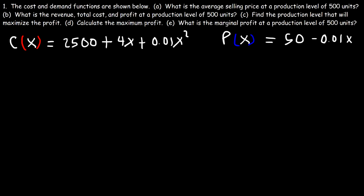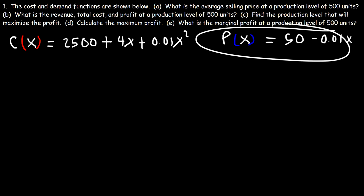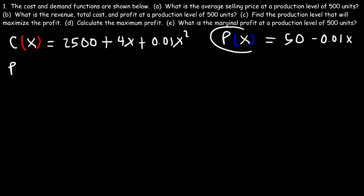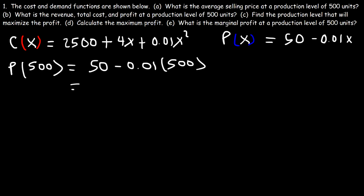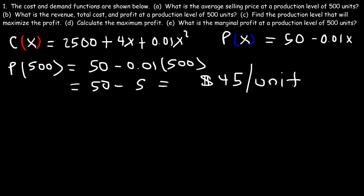The cost and demand functions are shown below. What is the average selling price at a production level of 500 units? This is the demand function, also known as the price function — it tells us the selling price at a certain production level. Don't confuse this with the profit function. The price at 500 is going to be 50 minus 0.01 times 500, which is 5, so this is 50 minus 5, giving us $45.